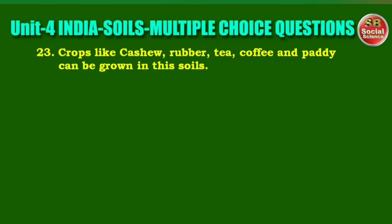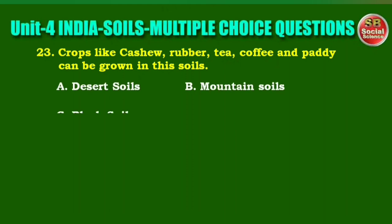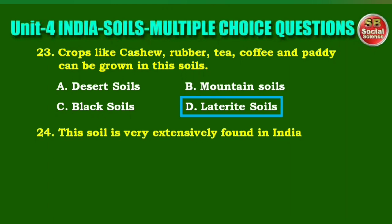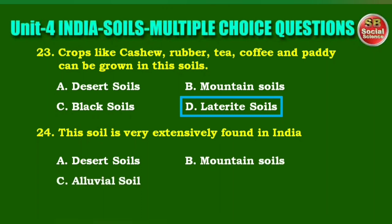Next question: crops like cashew, rubber, tea, coffee, and paddy can be grown in these soils. Options are: desert soils, mountain soils, black soils, laterite soils. The right answer is option D, laterite soils. Next question: this soil is very extensively found in India. Options are: desert soils, mountain soils, alluvial soils, black soils. The right answer is option C, alluvial soils.